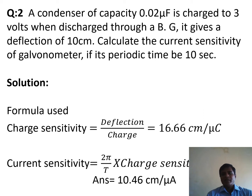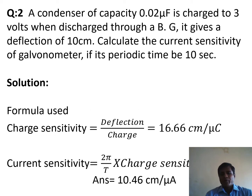The deflection is 10 centimeters. Substituting the values of deflection and charge into the charge sensitivity formula, the final value for charge sensitivity is 16.66 centimeters per microcoulomb. The current sensitivity = (2π / T) × charge sensitivity = (2π / T) × 16.66 cm/μC, giving a final result of 10.46 centimeters per microampere.